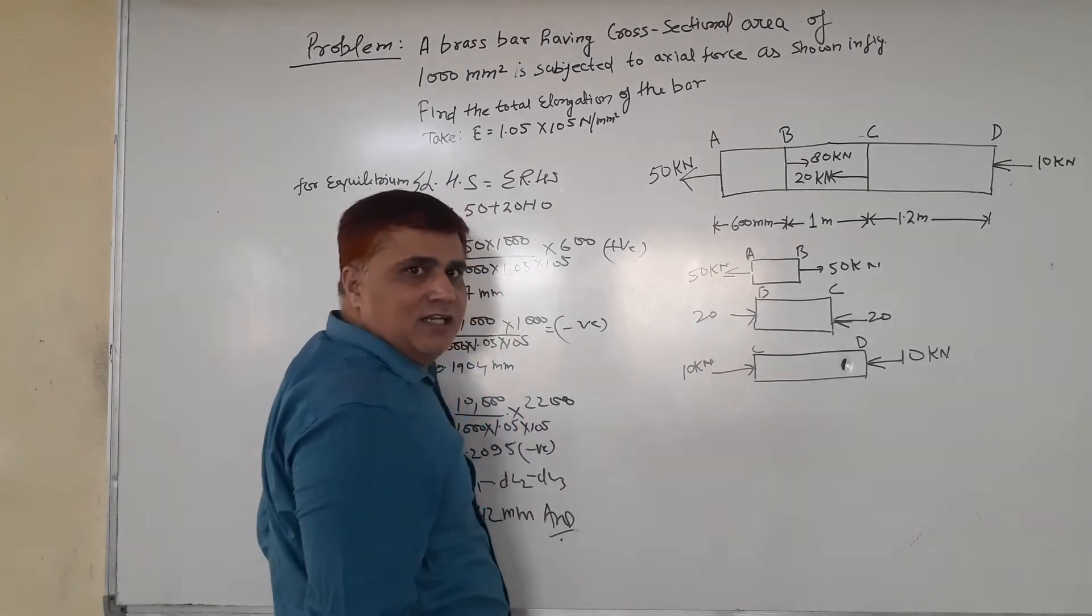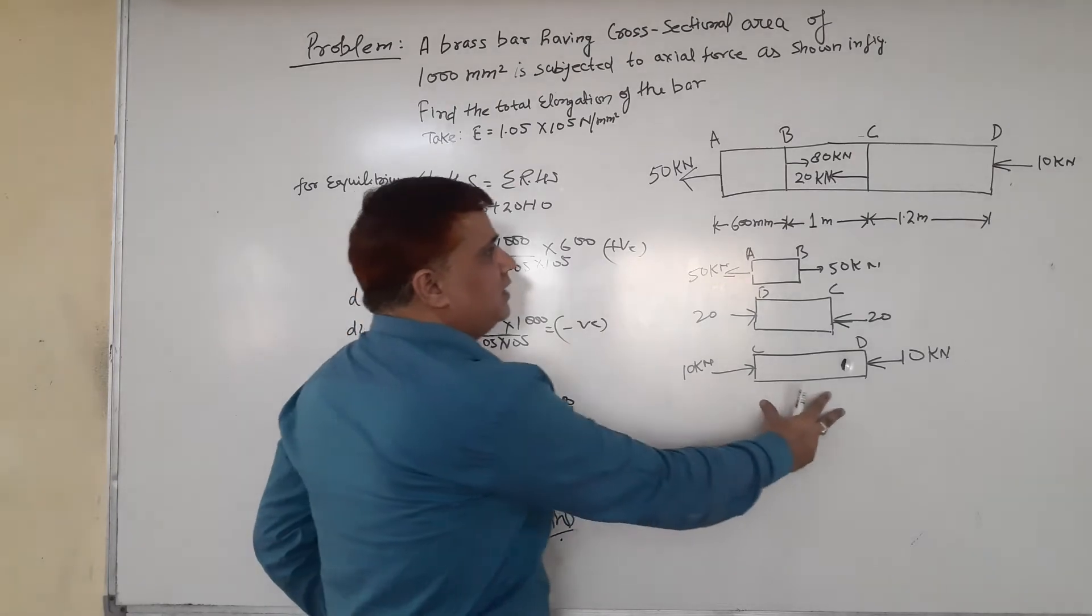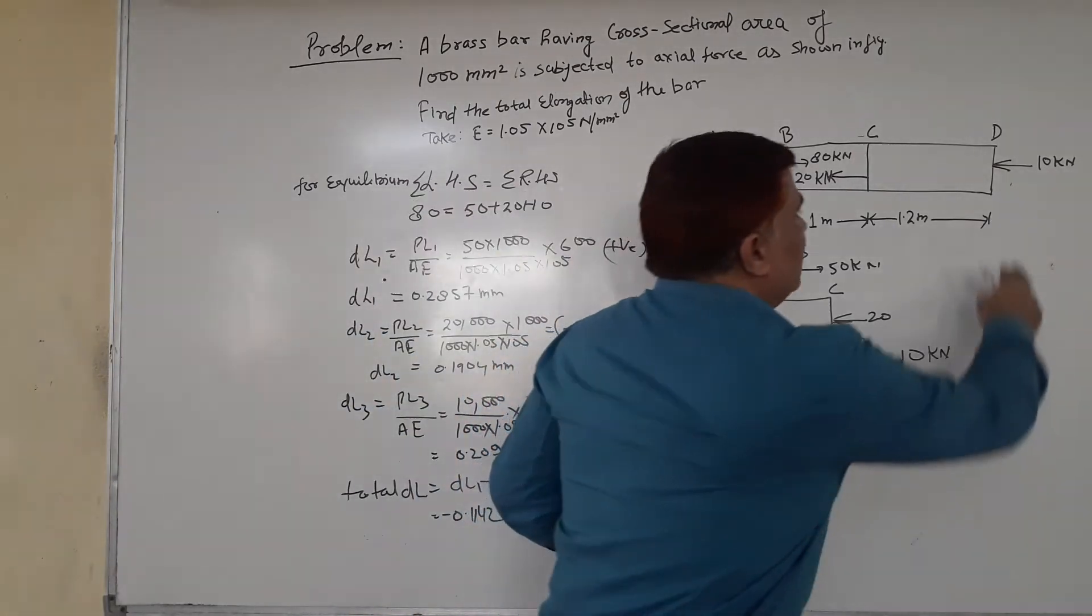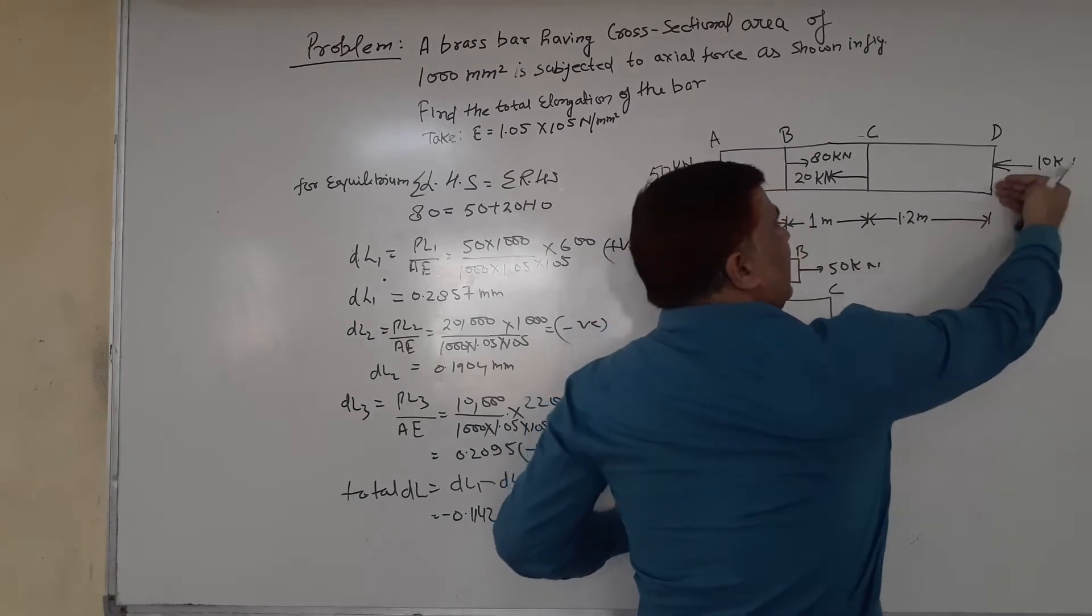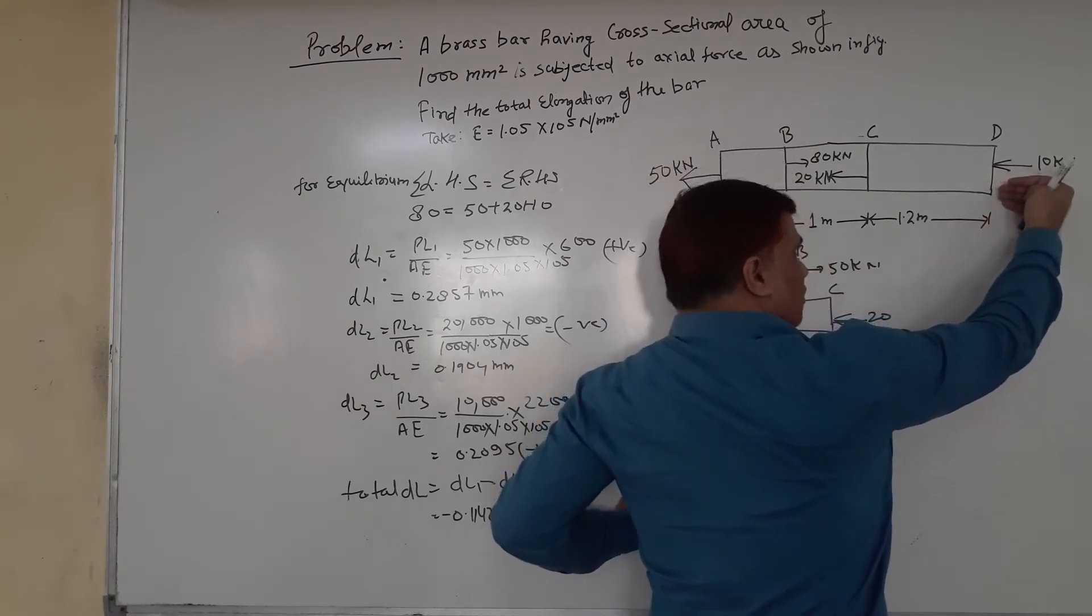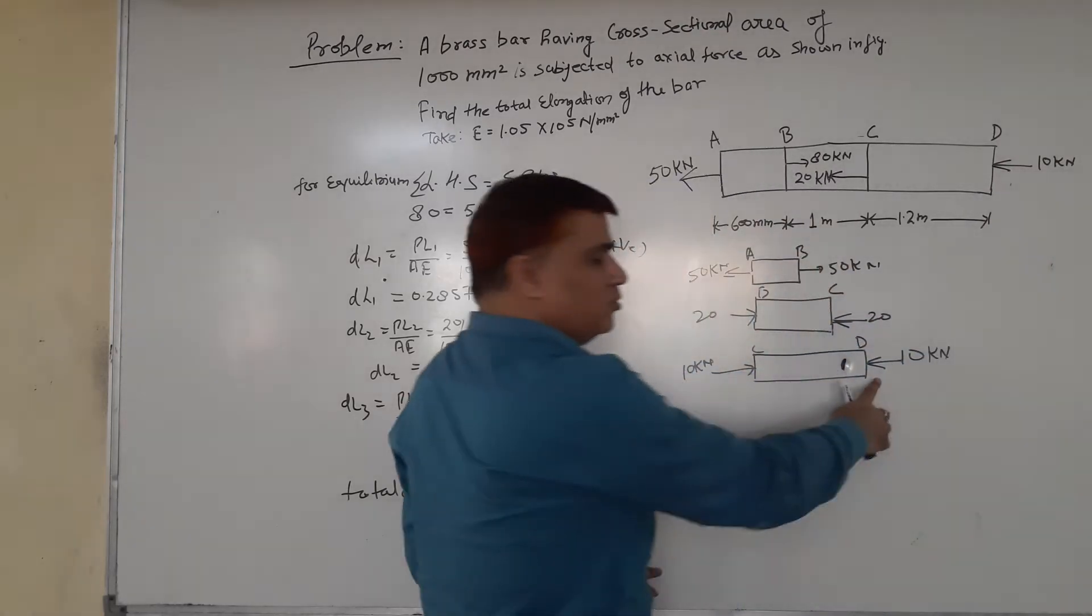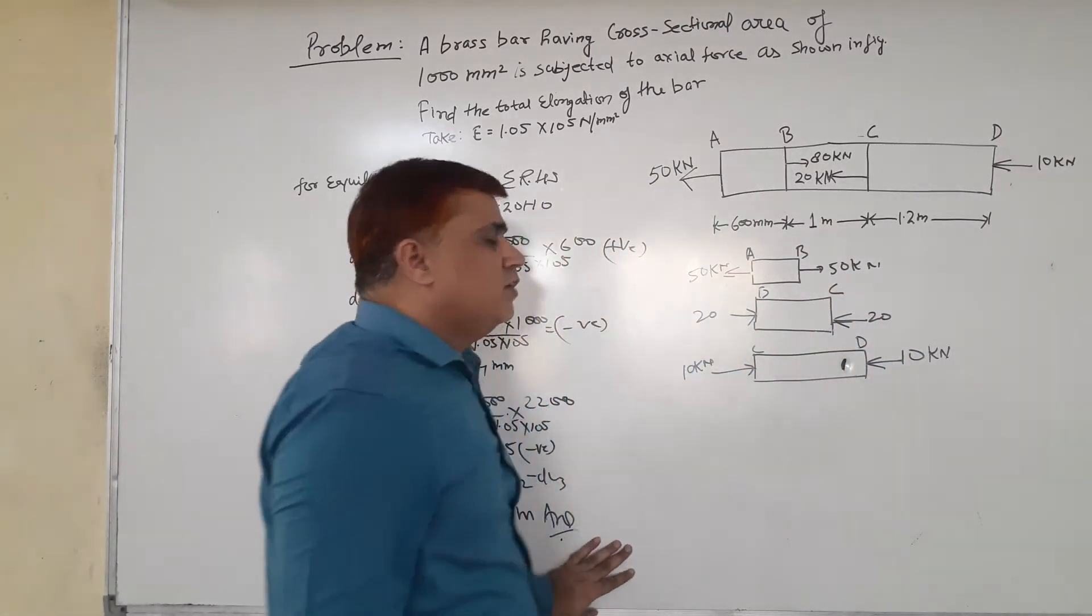Now we're considering the third section, CD. In the CD section, we see 10 kN is acting as a compressive load on portion D. We have to apply 5 kN on portion D.